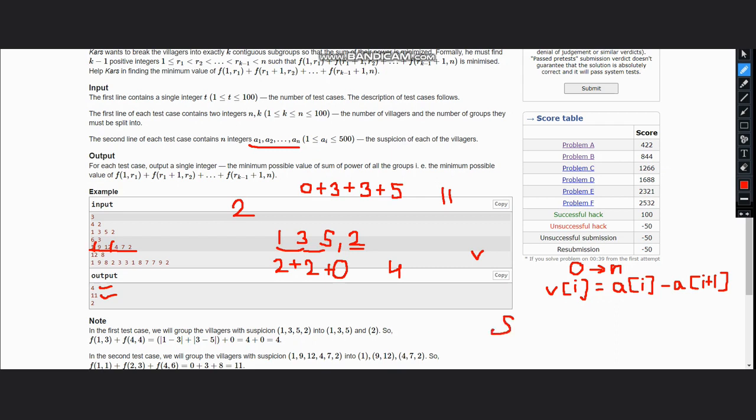Once it is done, we will simply use sort and sort V. After sorting V, we would take the first N minus K elements of the V array and add them. So the sum obtained from this would be the answer.